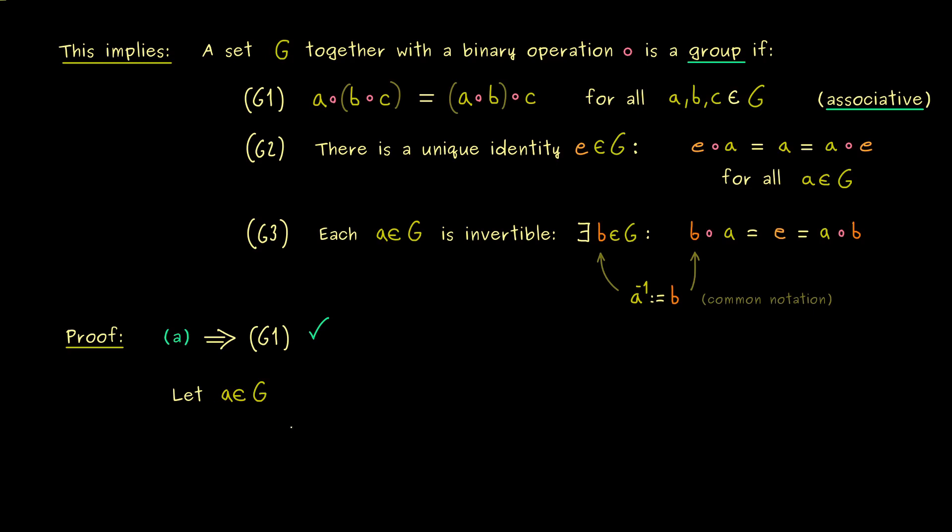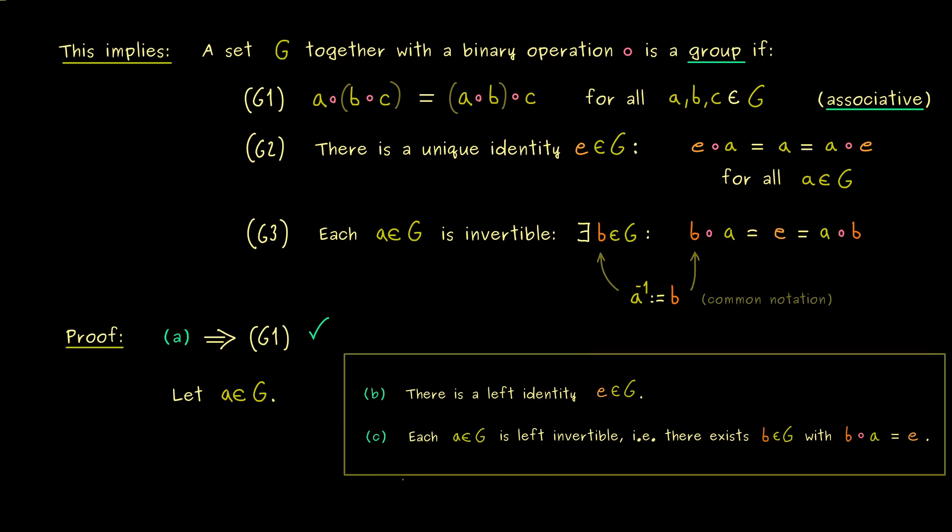Much more interesting now is to show that we have our neutral element and all the inverses. In order to show this, let's fix an arbitrary element from our set G. And now please recall our two things from the assumptions: that we have a left identity and left inverses. So this implies that we already know about the existence of such an element b here.